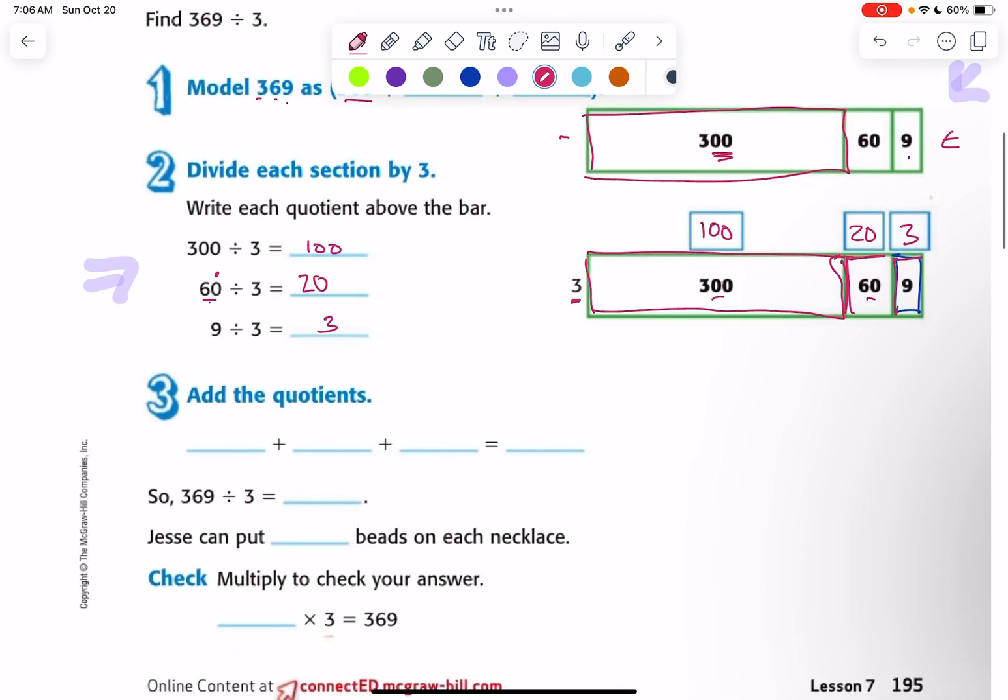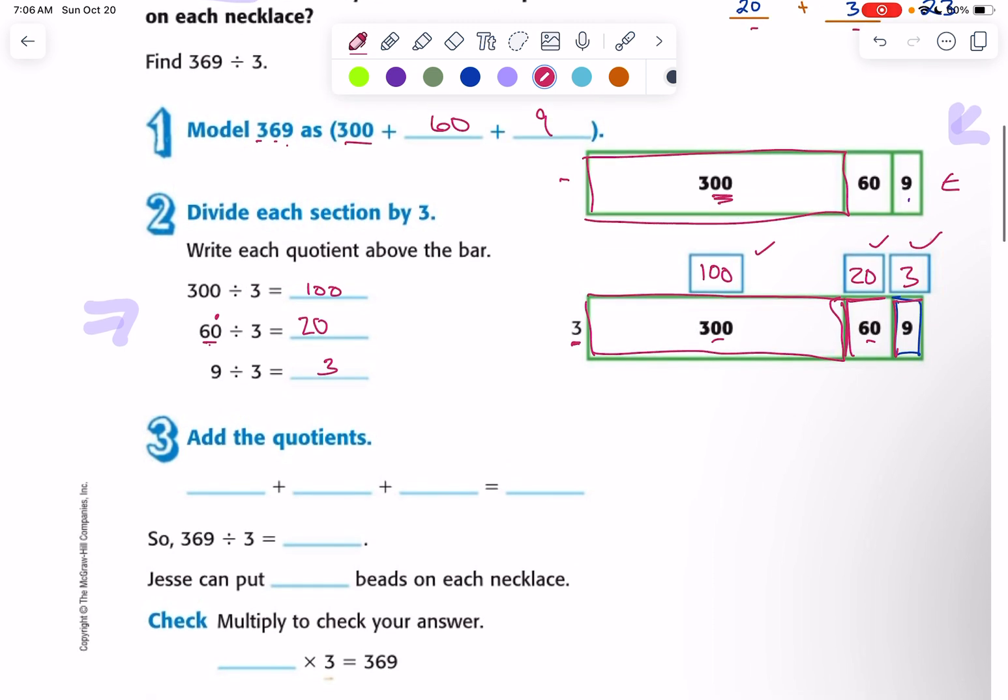So if we add up all of these quotients, we will get the quotient to 369 divided by 3. So 100 plus 20 plus 3. 100, 120, 123. So 369 divided by 3 is 123, which means Jessie can put 123 beads on each necklace.